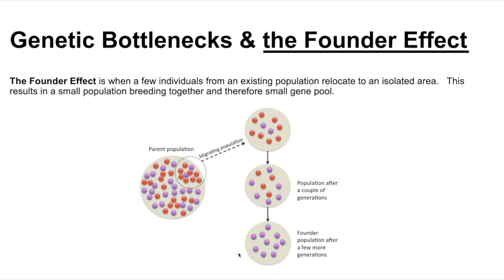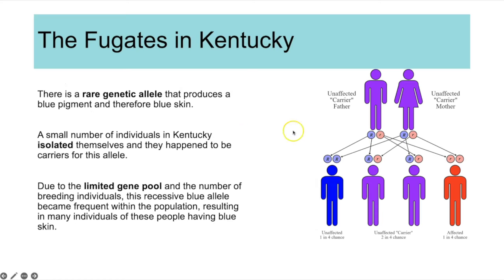The founder effect occurs when a few individuals from an existing population migrate to an isolated area. This also results in a small gene pool and a small population reproducing together, producing the same effect: loss of alleles, the same individuals reproducing together, and a lack of genetic diversity. The cause is different — instead of many individuals dying out, a small number migrate and isolate themselves.